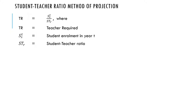The first method is the student-teacher ratio method of projection. In this case, you will need to know the total number of students on ground to determine the total number of teachers required. The formula uses: T (teachers required), STS (student enrollment in year T), and STR (student-teacher ratio). You need the student enrollment and the student-teacher ratio to determine the total number of teachers needed.